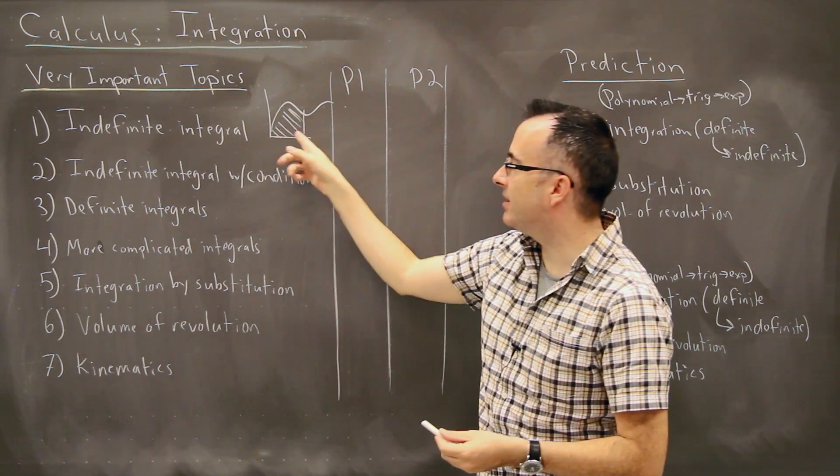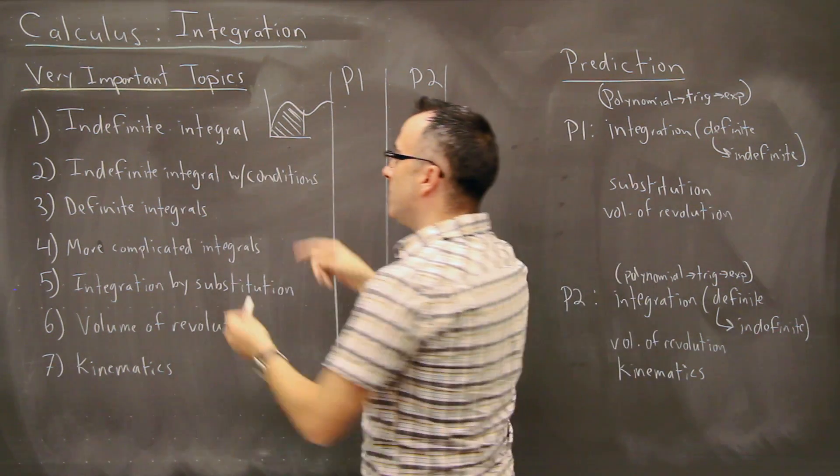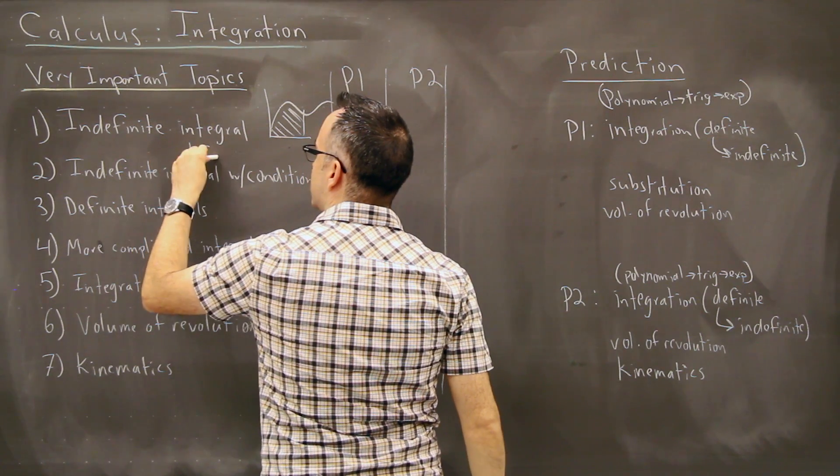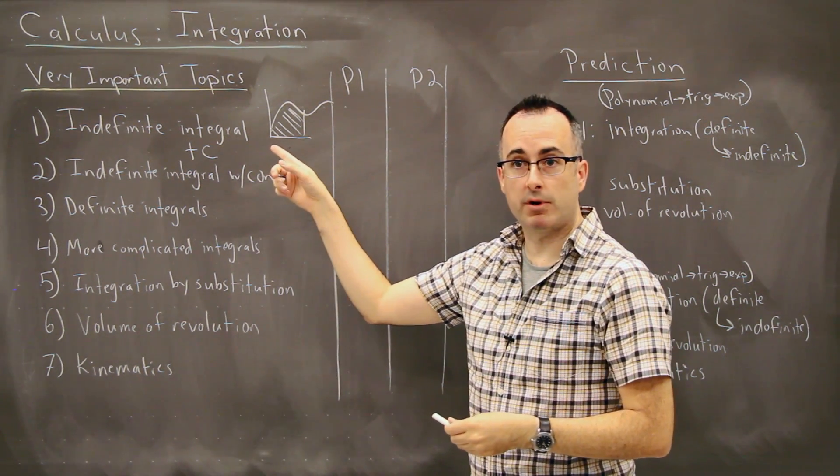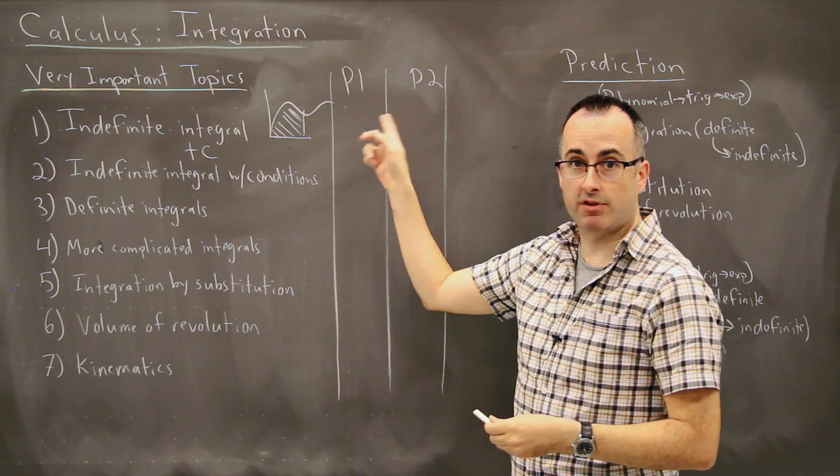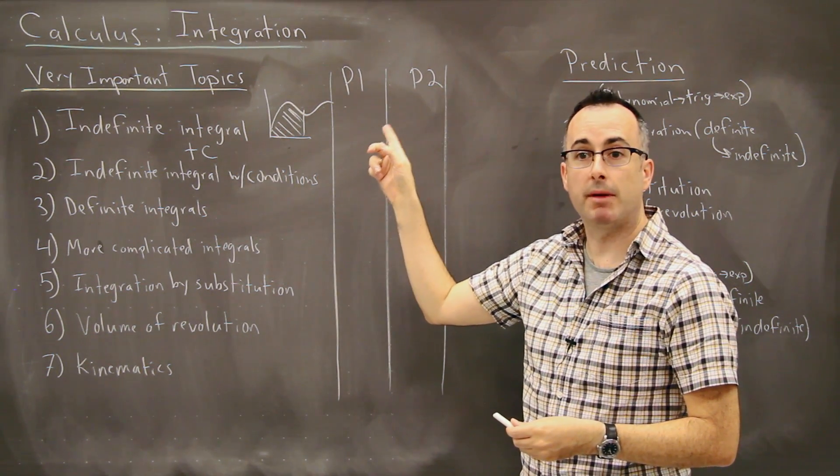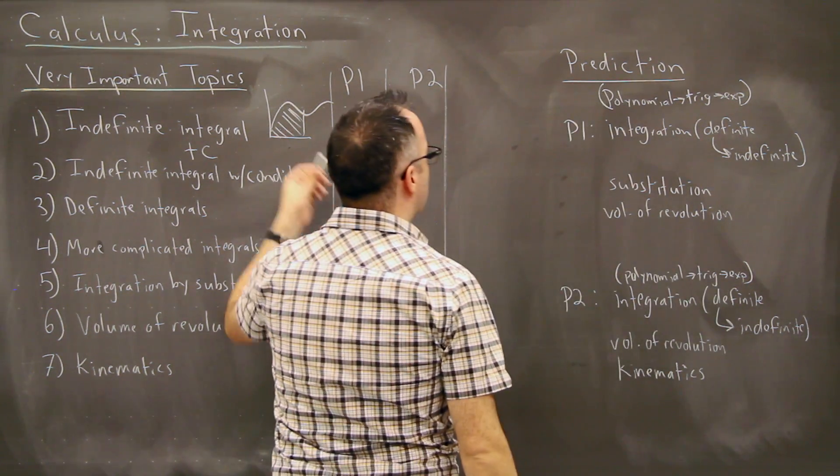So what we can do is we can have indefinite integrals. These are things where you always have to remember each of these things has a plus C when you're done, some sort of constant. Now these ones right here, they show up pretty commonly on both different types of exams. So they show up on paper one and paper two pretty evenly here.